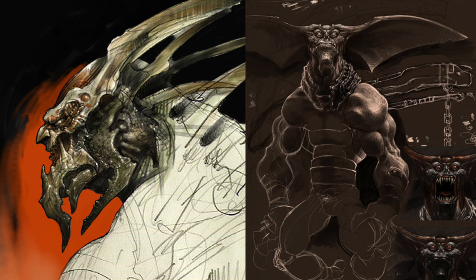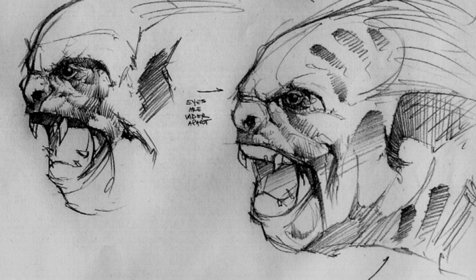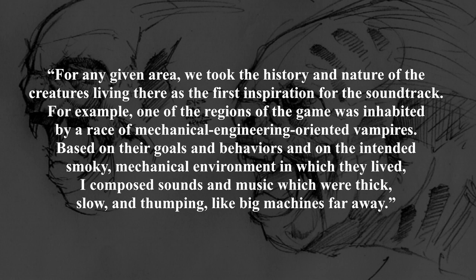Kurt Harland gathered inspiration from architectural drawings and lore based on the various vampire clans of Nosgoth. Amy Hennig described their backstory to Harland, and he did a fine job of matching his work to the various areas of the game. Harland states: "For any given area we took the history and nature of the creatures living there as the first inspiration for the soundtrack. For example, one region was inhabited by a race of mechanical engineering-oriented vampires. Based on their goals and behaviours, and on the intended smoky mechanical environment, I composed sounds which were thick, slow and thumping, like big heavy machines far away."